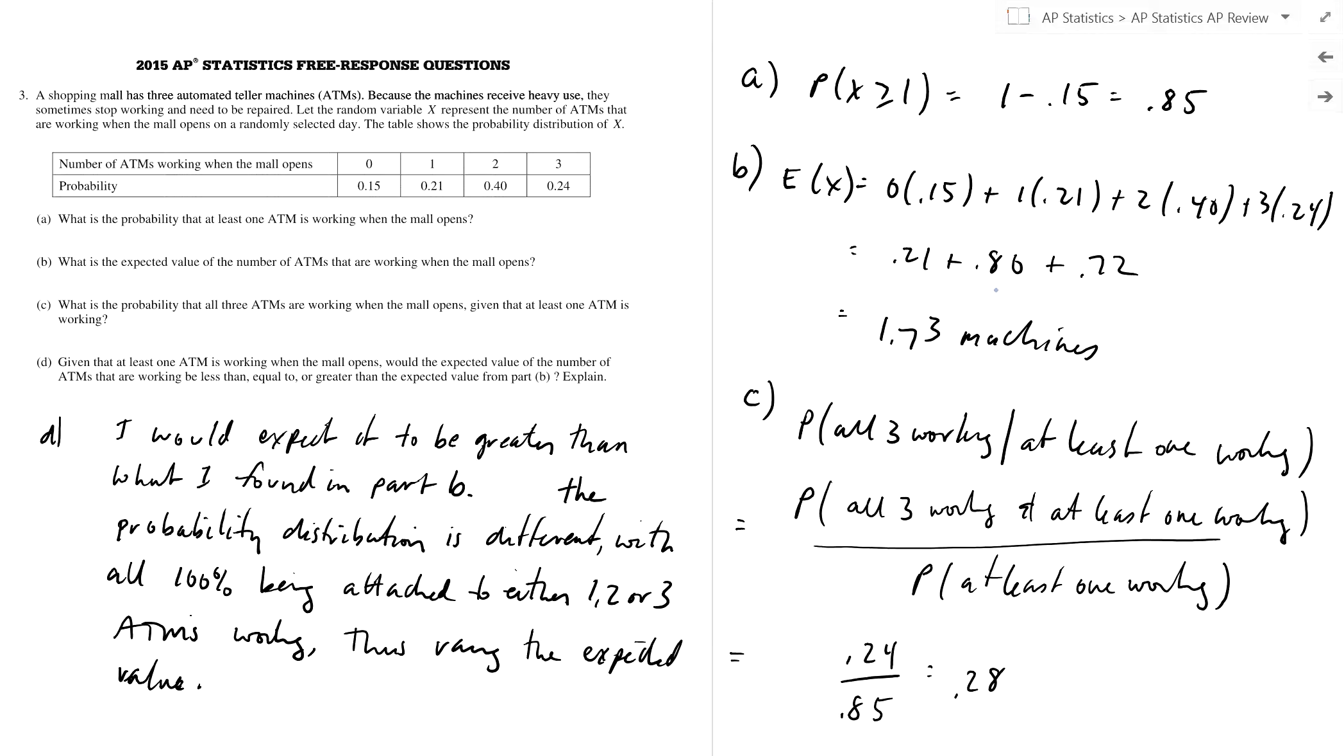This had a pretty low average as well for some crazy reason. So we got a number of ATMs working when the mall opens. Probability was given in the table right here. What's the probability that at least one ATM is working when the mall is open? That is this guy right here.